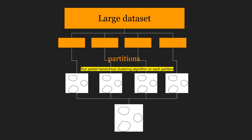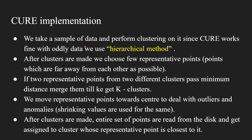So this is how CURE clustering works. You create clusters from 10,000 or 50,000 rows but only consider a few representative points, using hierarchical clustering. To implement CURE: take a sample of data and perform clustering on it using the hierarchical method. After clusters are made, choose a few representative points that are as far from each other as possible. If two representative points from two different clusters pass the minimum distance threshold, merge them until we get k clusters.